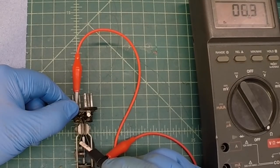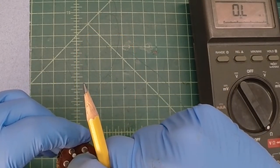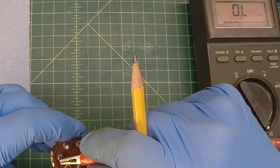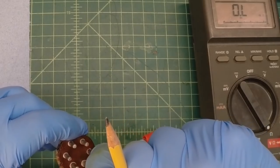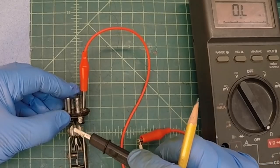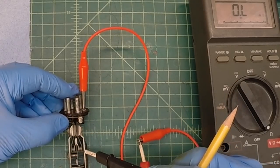So about one ohm. All right, now I should be able to move over to pin number five. One, two, three, four, number five.